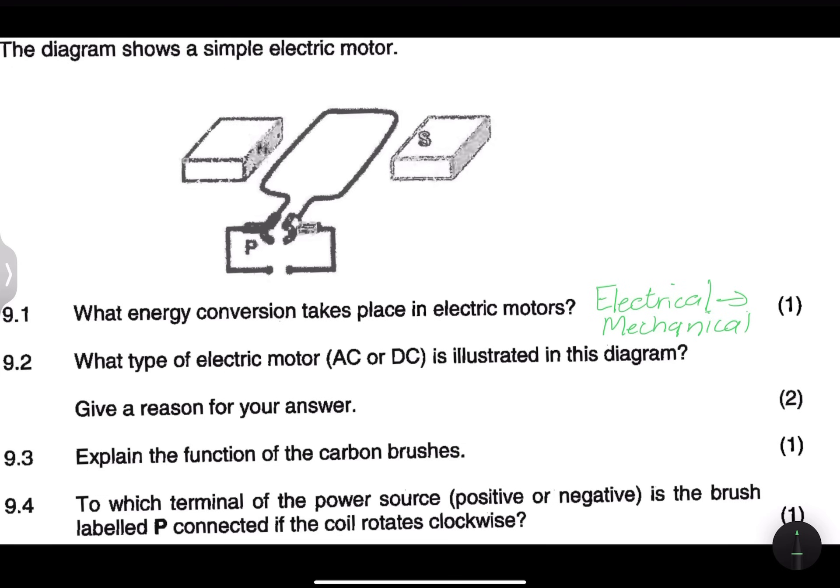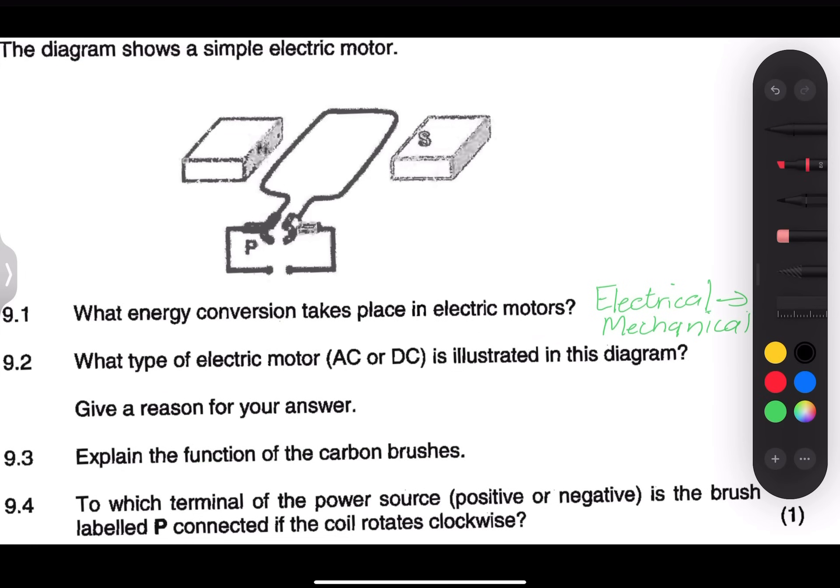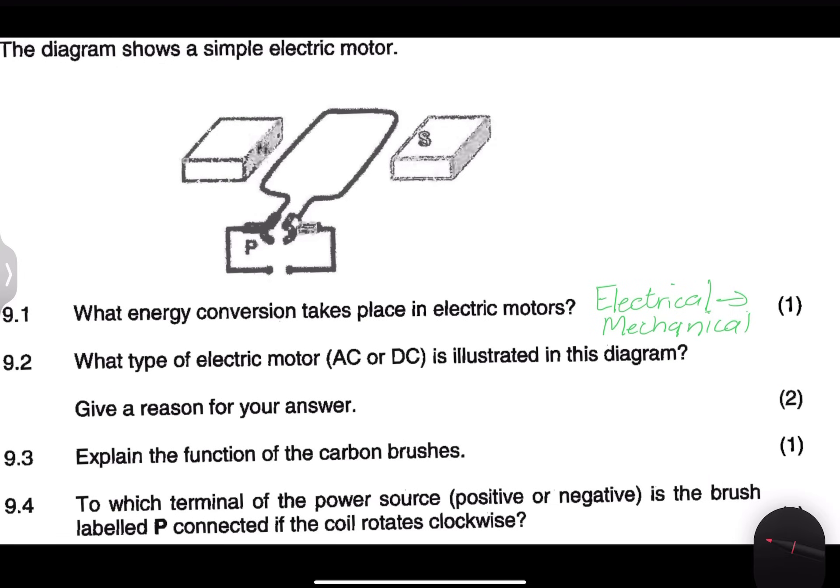They say what type of electrical motor, AC or DC, is illustrated in this diagram? So you see there that you've got, in this case, what we call split rings. So right there next to your brushes, you've got your split rings and they are not full rings. So when we've got split rings, remember that in this case, that would be a DC motor.